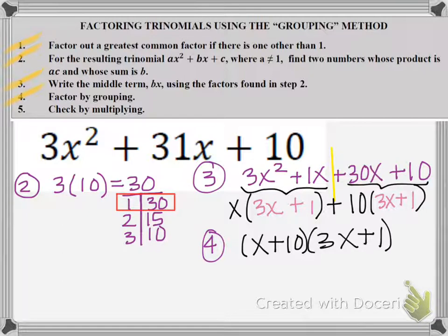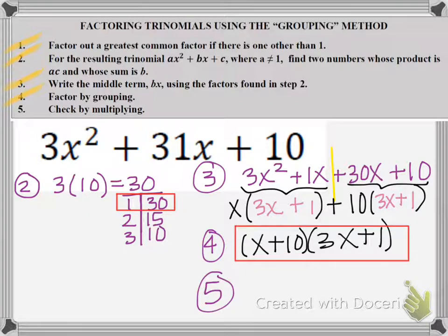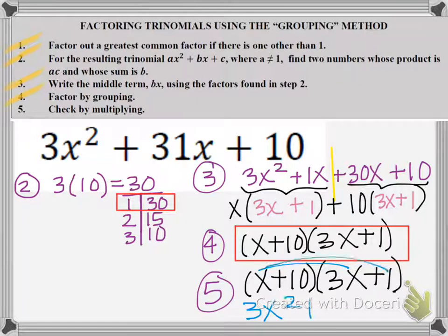So I'm pretty sure I'm done with step 4, but I want to make sure that I have the correct answer. So I think the answer is x plus 10 times 3x plus 1, but I'm going to check it in step 5. So let me write the binomials one more time and now let me do FOIL. I'd get 3x squared plus x plus 30x plus 10.